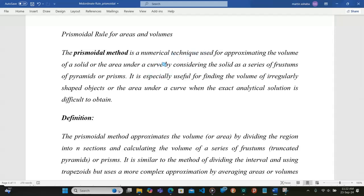The prismoidal method is a numerical technique used for approximating the volume of a solid or the area under a curve by considering the solid as a series of pyramids or prisms. It is especially used for finding the volume of irregularly-shaped objects or the area under a curve when the exact analytical solution is difficult to obtain.